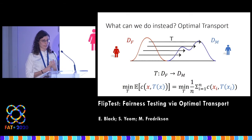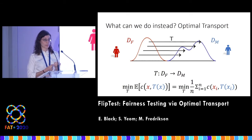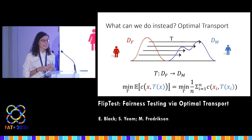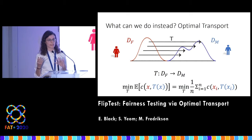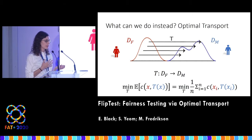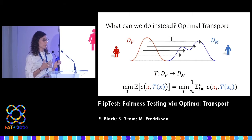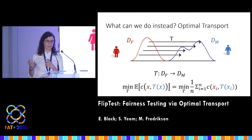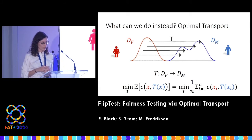Some nice things about getting the male version of me in this way: first, we're not making any causal assumptions — we're just relying on observational data. And we're guaranteed to get an in-distribution sample, or a realistic male, since by definition the optimal transport mapping goes from the female distribution to the male distribution.